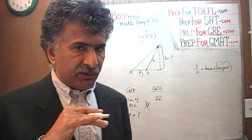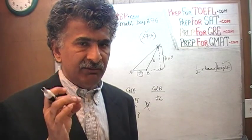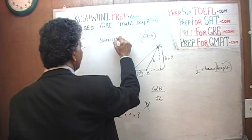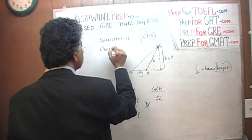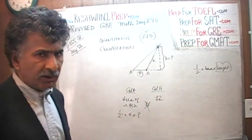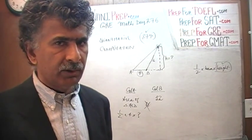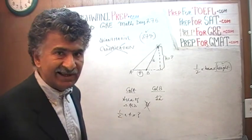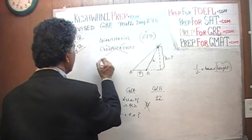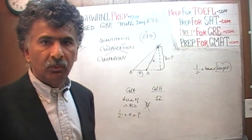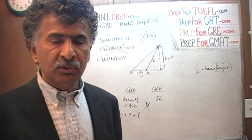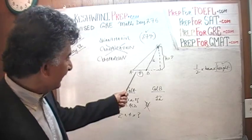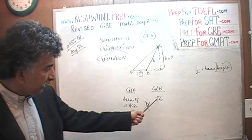These second-category people are making a tremendous blunder. These questions are NOT called quantitative computation — they are called quantitative comparison, and for a reason. We are being asked to compare the two quantities. Nobody is asking us to compute the exact area. We are simply being asked: is the area of this triangle greater than, less than, or equal to 12?